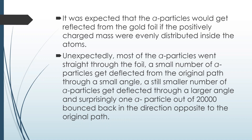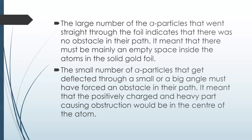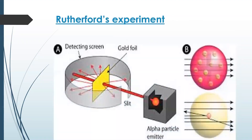Unexpectedly, most of the alpha particles went straight through the foil. A small number of alpha particles got deflected from the original path through a small angle. A still smaller number got deflected through a larger angle, and surprisingly, one alpha particle out of 20,000 bounced back in the direction opposite to the original path. The large number of alpha particles that went straight through indicates there was no obstacle in their path — meaning there must be mainly empty space inside the atoms. The small number that got deflected must have encountered an obstacle, meaning the positively charged and heavy part causing obstruction would be in the center of the atom. This image shows Rutherford's experiment.